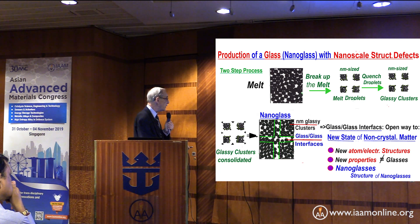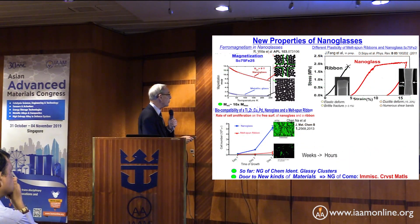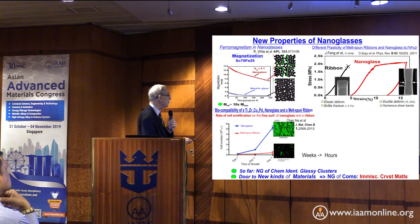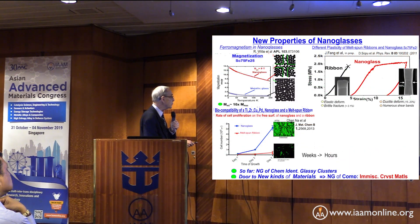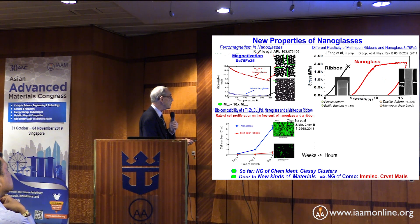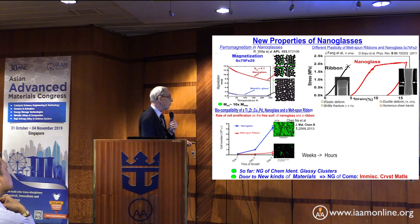These glassy clusters are then taken and consolidated. One property shown here is ferromagnetic behavior. Here is a normal melt-spun glass, and here is a nanoglass. The magnetization is about ten times higher in the nanoglass, although it has the same chemical composition — and this is due to those interfaces.